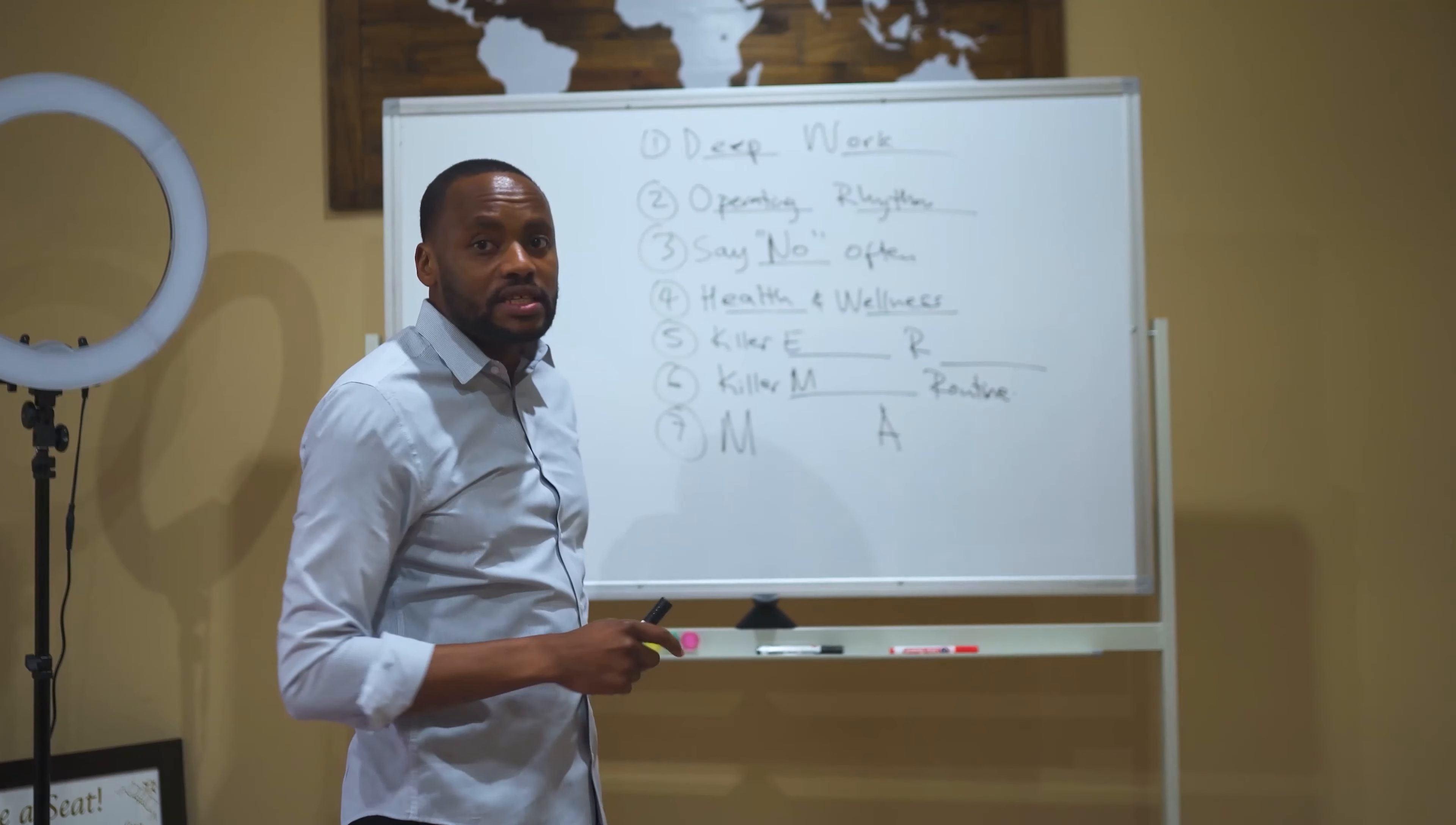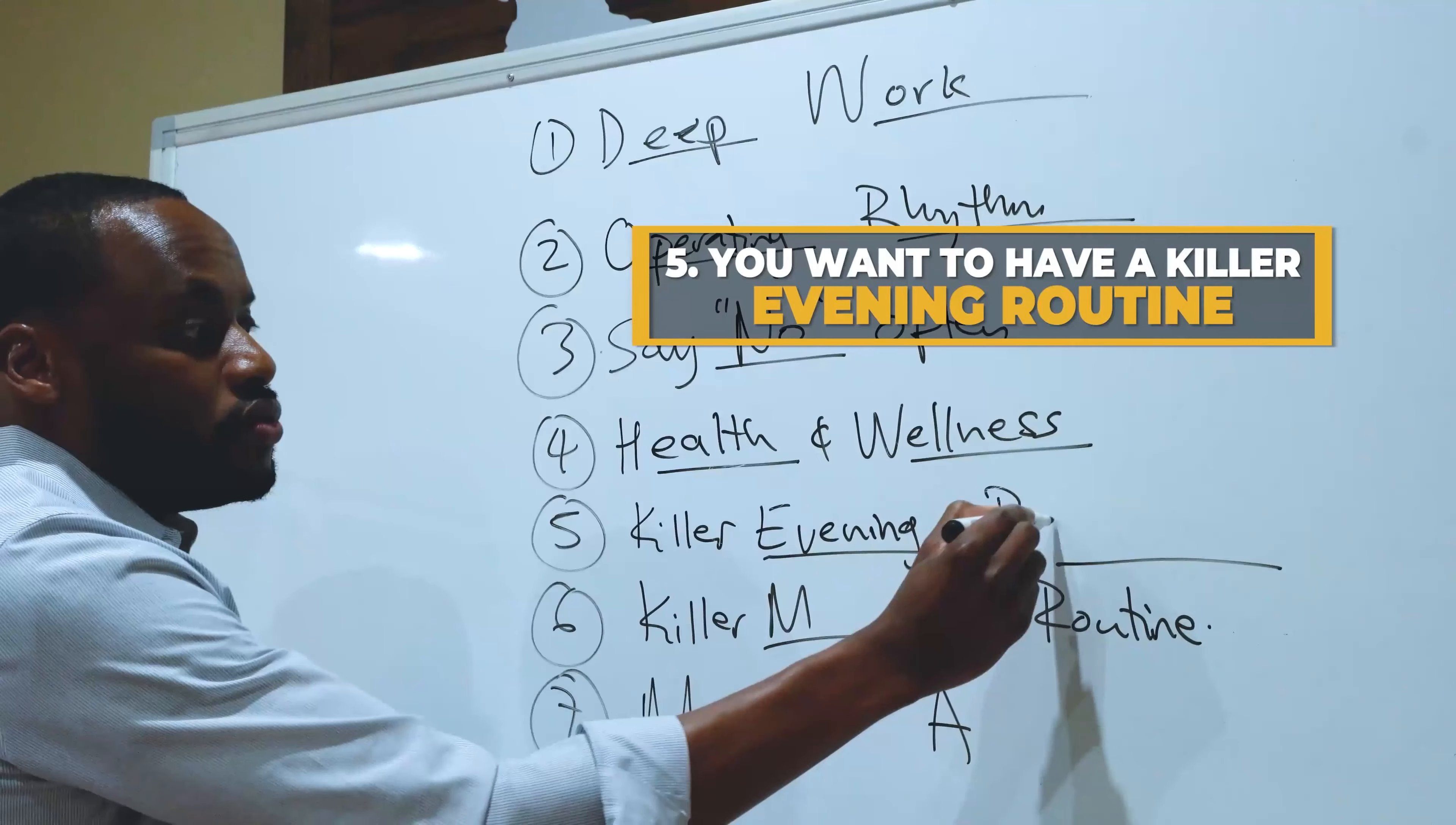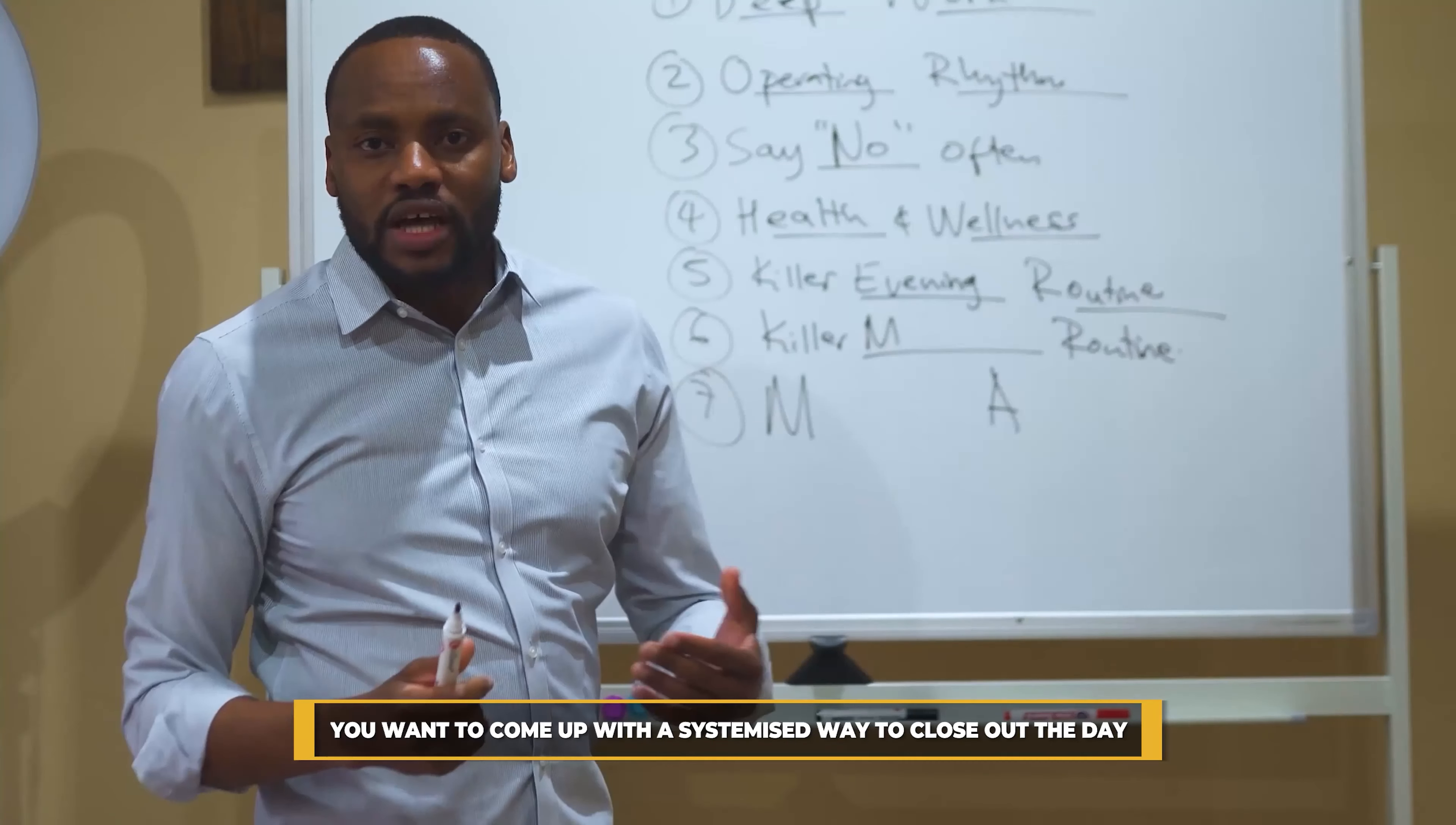The next two, number five and six, they're connected. And the next one really is you want to have a killer evening routine. What I mean by this is you want to be able to really make sure that you come up with a systemized way to close out the day.